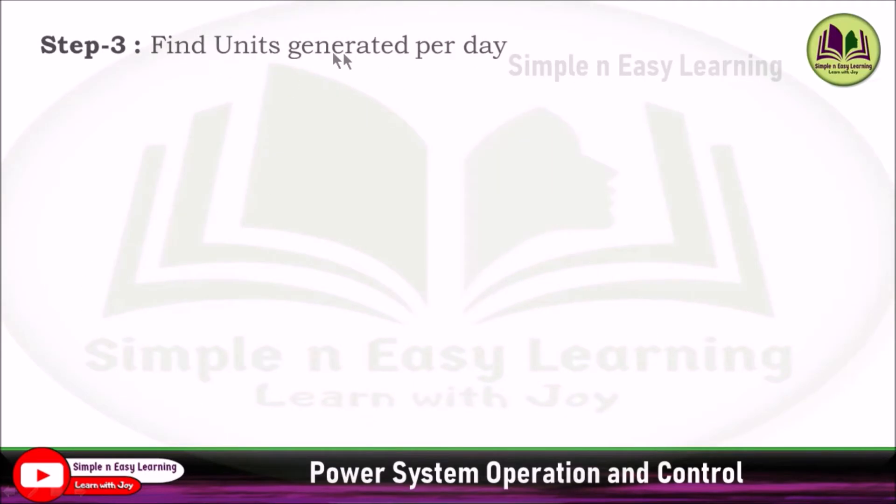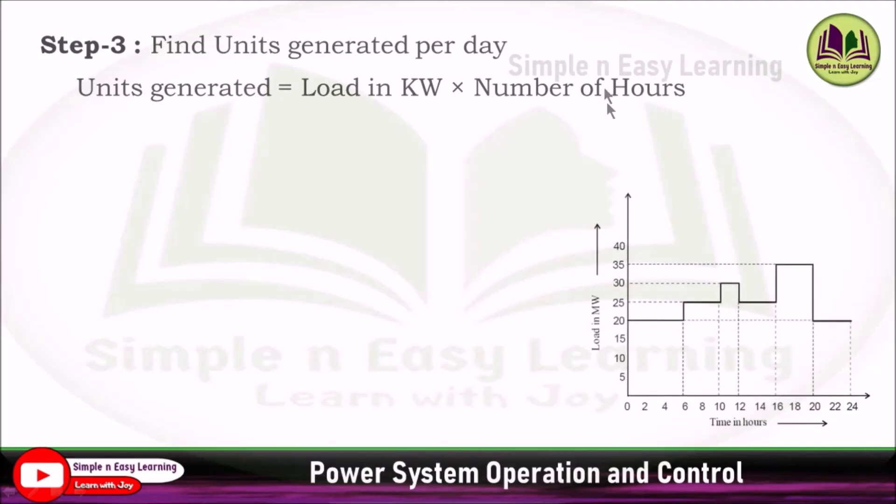Step 3: find units generated per day. Units generated equals load in kilowatt times number of hours. Consider this load curve. Take the load and the number of hours. First one, 0 to 6, that is 6 hours, 20 megawatt of load is consumed, so 6 into 20. Next one, 25 megawatt for 4 hours 6 to 10, and 30 megawatt for 2 hours, so 30 into 2. Then 25 megawatt again for 4 hours, 25 into 4. Then 35 megawatt into 4 hours 16 to 20. And finally 20 megawatt for 4 hours, 20 into 4.